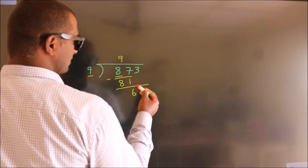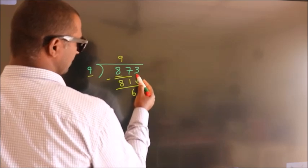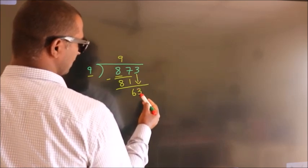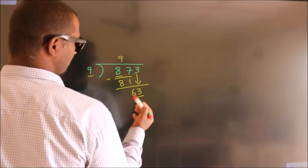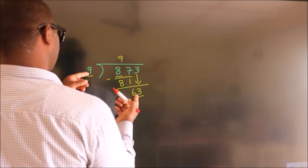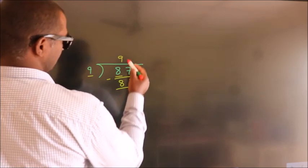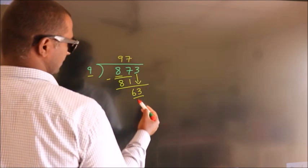After this, bring down the beside number. So 3 down, so 63. When do we get 63 in the 9 table? 9 7's, 63.